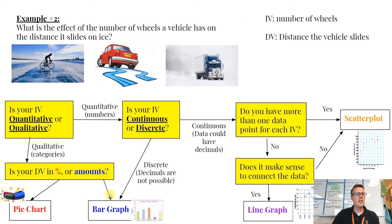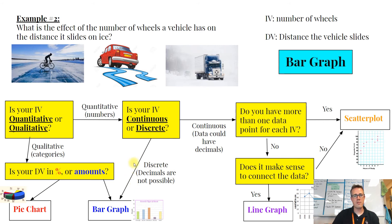For the second example, let's say you want to find out what is the effect of the number of wheels a vehicle has on the distance it slides on ice. We start with the IV, which this time is the number of wheels. Number of wheels is quantitative — that's a number. So we ask: is it continuous or discrete? It wouldn't make sense to have a decimal — a car has four wheels, a truck has 18, a bike has two. That's a number without a decimal, so it's discrete. This would also be a bar graph.